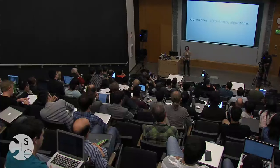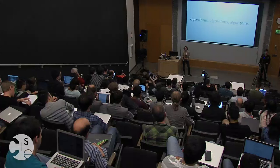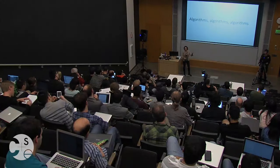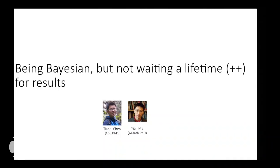Throughout this talk, I've described different ways to handle high-dimensional time series in data-scarce situations by leveraging sparse and low-rank structures, seeing the impact in many different applications. Of course, to actually see that impact, the algorithms we use are really crucial, so another big push in my group has been on algorithmic development. The first project I want to mention is work with Tianqi and Yin — the idea of how to be Bayesian but not wait a lifetime to get results, because computations can become a huge bottleneck.